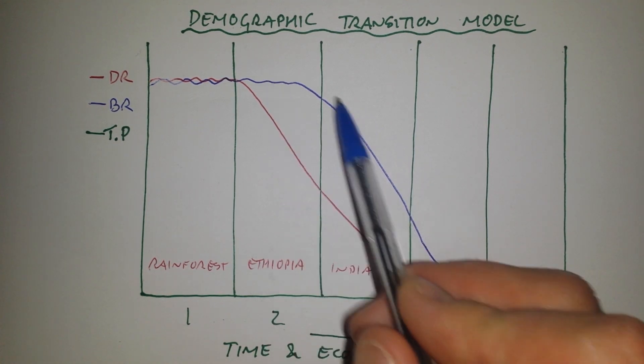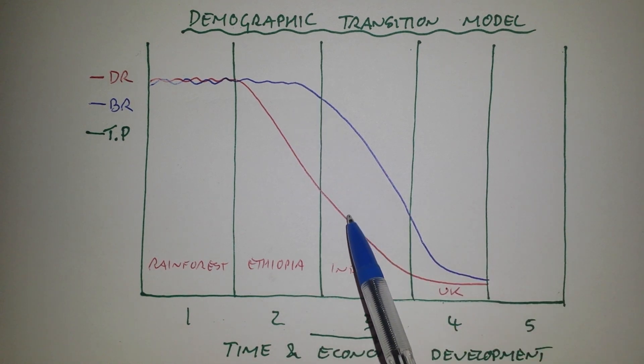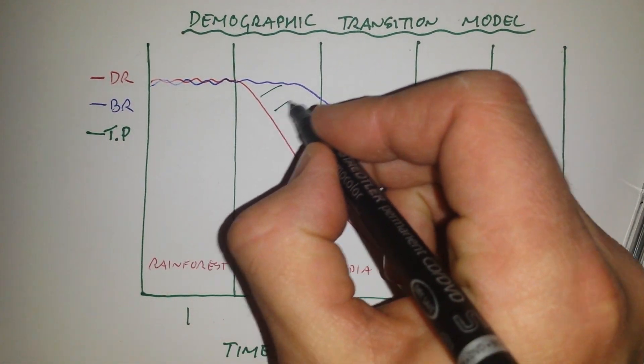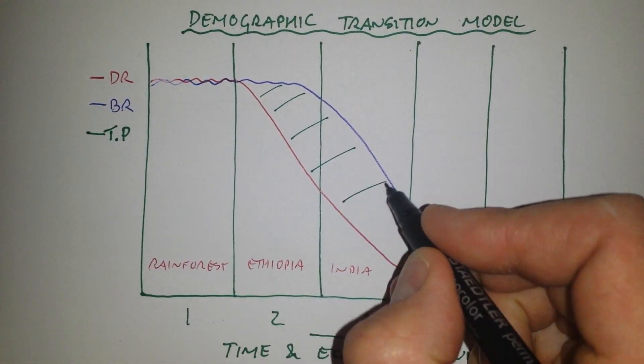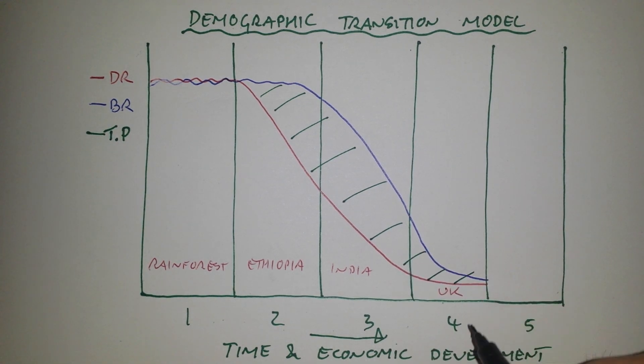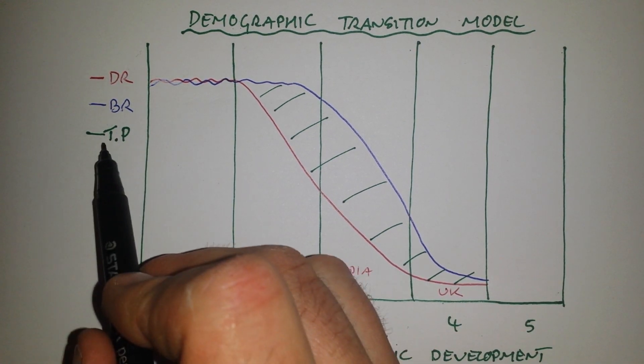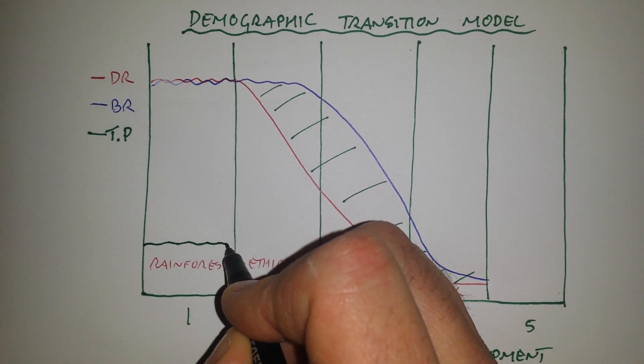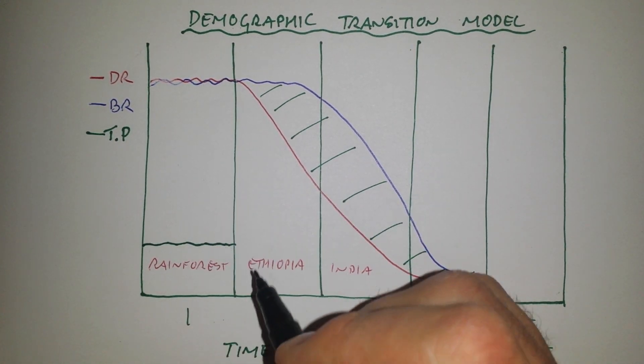But the significant thing here is throughout stage two and three, because the birth rate is higher than the death rate, you're going to have population increase. So anywhere where you have more people being born than dying, the population is going to go up. So the other line we need to draw on here is a line for total population. In stage one, the total population is going to remain low and steady because births cancel out deaths.